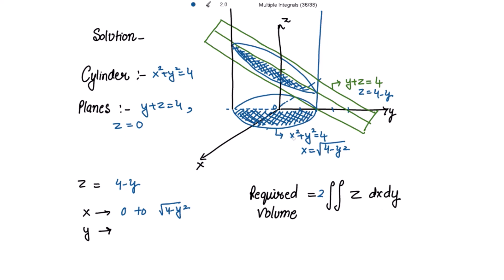In the outermost integral we have dy, so the limits of y should be constant. Putting x = 0 in the cylinder equation gives y = ±2. From the graph also, we have −2 and +2, so y varies from −2 to +2 for the shaded area.